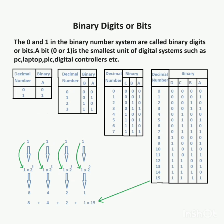Binary digits, or bits, are the 0 and 1 in the binary number system. A bit — 0 or 1 — is the smallest unit of data in systems such as a PC, laptop, PLC, and digital controllers.